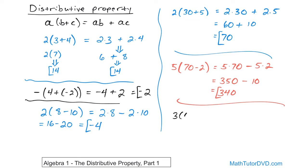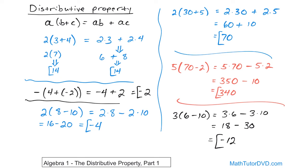One last one: three parentheses six minus ten. We apply this three to each term — three times six, the minus comes along for the ride, and then three times ten. Do the multiplication first: three times six is eighteen, the minus comes along for the ride, three times ten is thirty. Now you have eighteen minus thirty. You could write it as eighteen plus negative thirty. Just do the subtraction: thirty minus eighteen gives you twelve, and the sign is going to be negative because the larger absolute value comes from the negative thirty. So the answer is negative twelve.